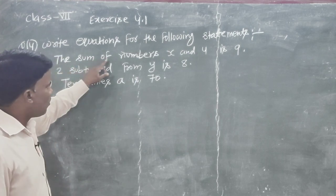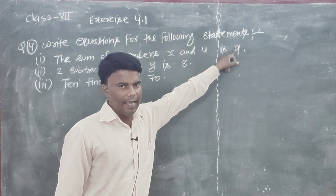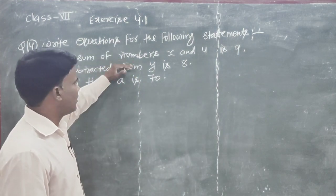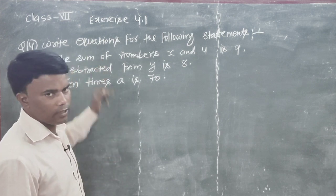The sum of numbers x and 4 is 9. This equation is not going to be converted according to the language.